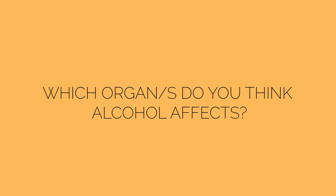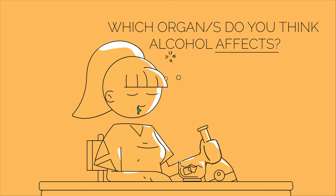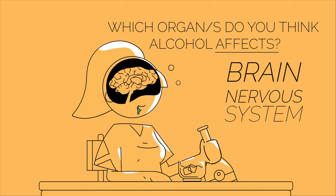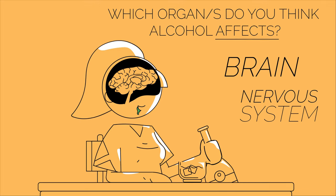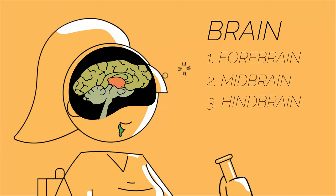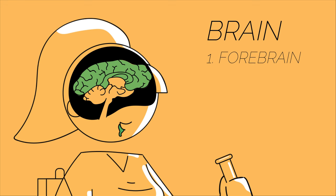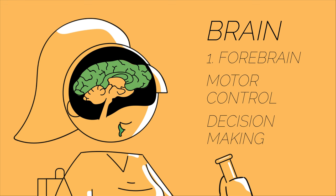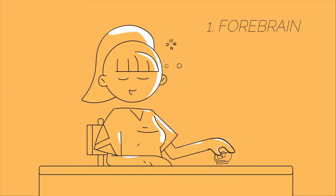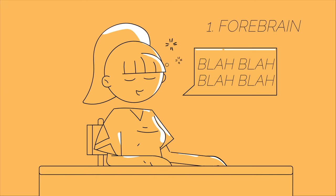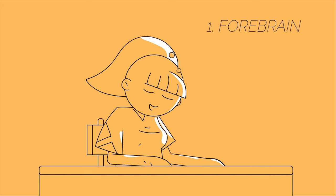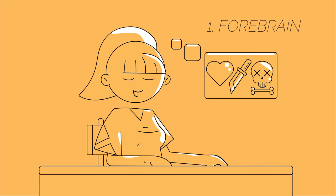Which organ or organs in the body do you think this affects? If you said our brain and nervous system, you're right. Your brain has three main divisions that are all affected by alcohol. Firstly, alcohol affects the forebrain, which is responsible for motor control and decision-making. Drinkers become clumsy, slow their speech, lose their inhibitions and ability to make sensible choices.